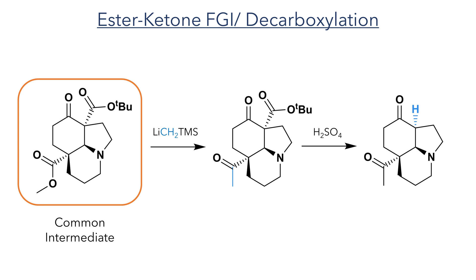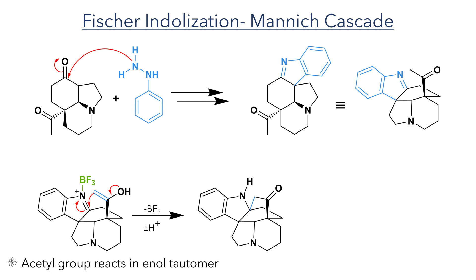With the synthesis of minovinsine complete, we can now turn our attention towards aspedofractanine. Starting with the intermediate molecule common to both syntheses, the authors carried out a functional group interconversion to convert the methyl ester to a methyl ketone using the same TMS-methyl lithium methodology as previously described. This reaction was selective for the methyl ester due to the steric hindrance of the tert-butyl ester, which eliminated the need for a protecting group. The beta-keto tert-butyl ester was then decarboxylated using sulfuric acid in the same manner as was used in the minovinsine synthesis. The aspedofractanine synthesis uses a Fischer indole sequence to install the indole moiety, similar to minovinsine. However, it has a significant variation.